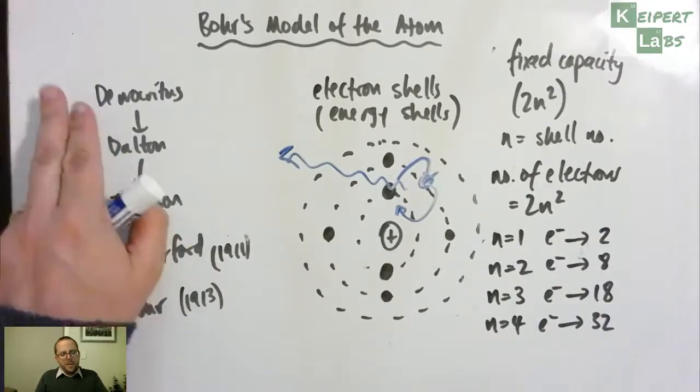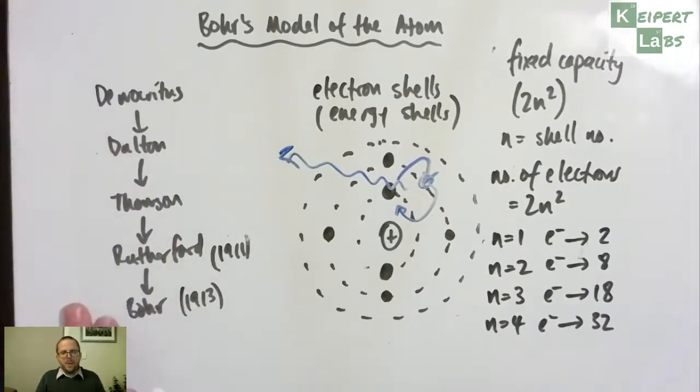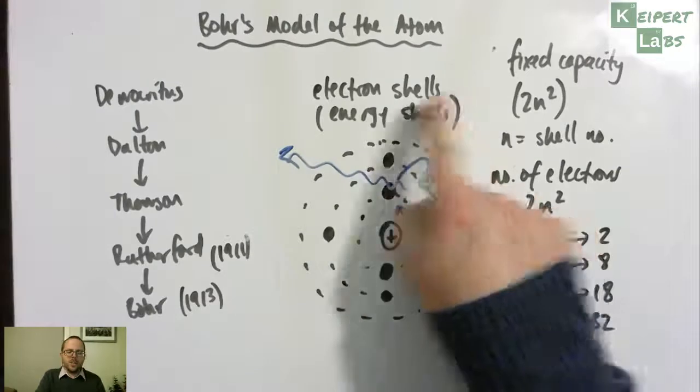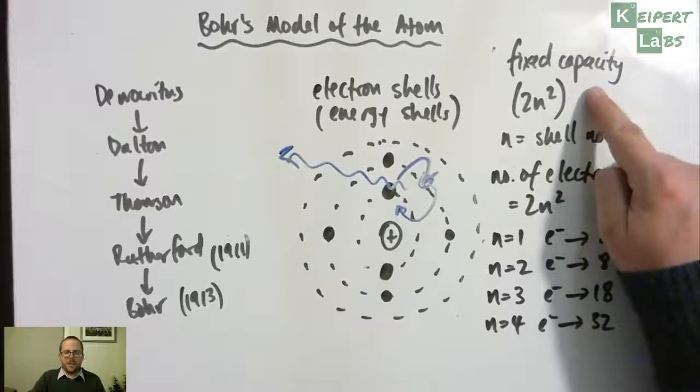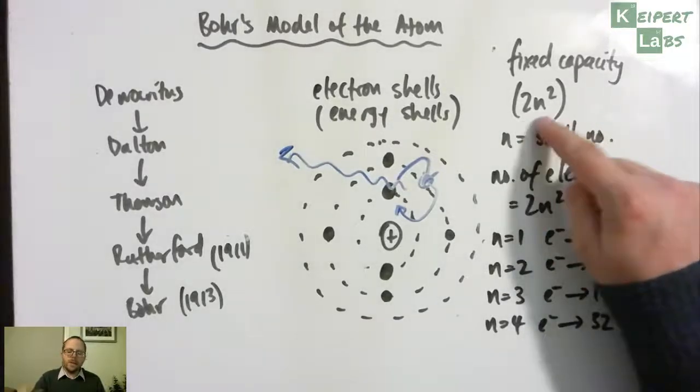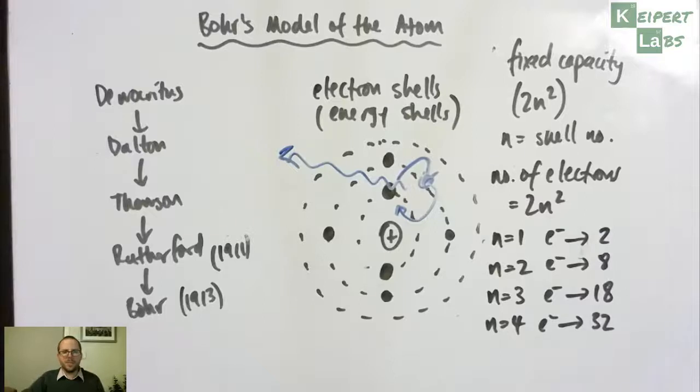So we've traced, over the last few videos, the development of ideas all the way up to Bohr. We've seen the improvements that Bohr's model made over Rutherford's model, by introducing the concept of electron shells. We've seen that electrons can jump between shells, and that shells have a fixed capacity, given by this math formula of 2n squared. All right, thanks very much for watching. Bye for now.